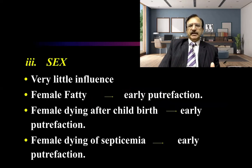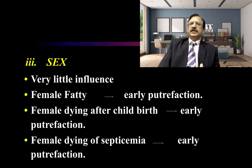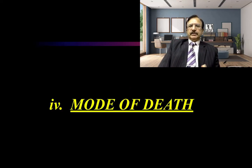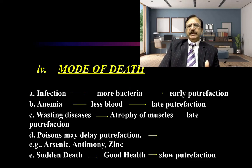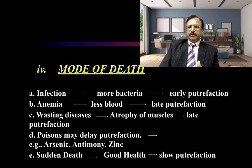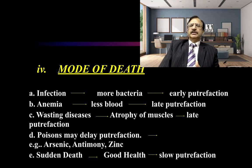Regarding sex: it has very little influence, but fatty females putrefy early. Females dying after childbirth or septicemia also putrefy early. Regarding mode of death: death due to septicemia or infection means more bacteria are present and putrefaction is early. In anemia, less blood means late putrefaction. In wasting diseases, due to atrophy of muscle, putrefaction is late. Certain poisons like arsenic, antimony, and zinc may delay putrefaction. In sudden deaths, as the body is in good health, putrefaction is slowed down.